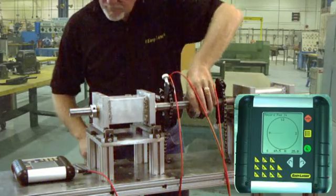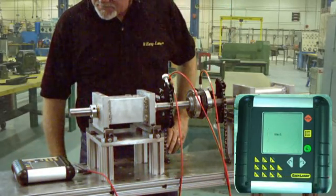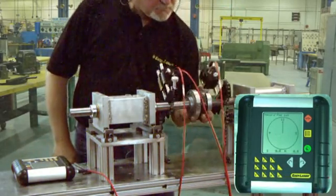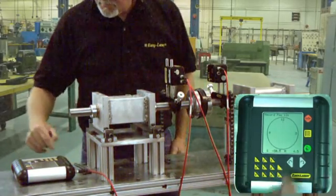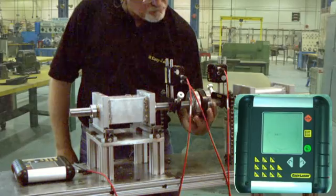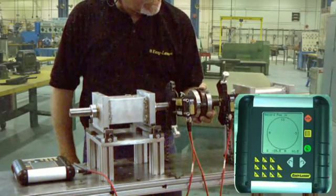We position the units with the spirit levels and press enter to record the measurement. Next the display prompts us to record at the 12 o'clock position. Finally onto the 3 o'clock using the spirit level to position the heads each time.